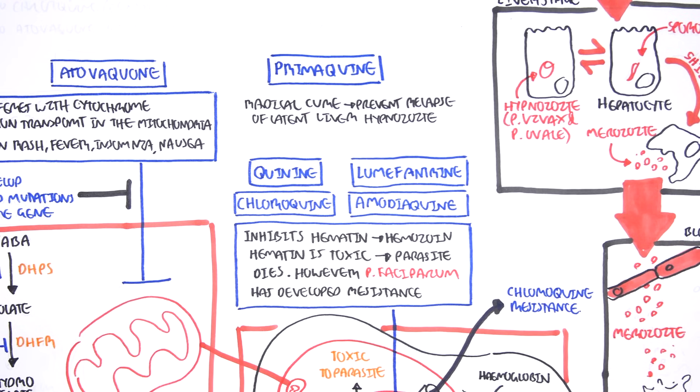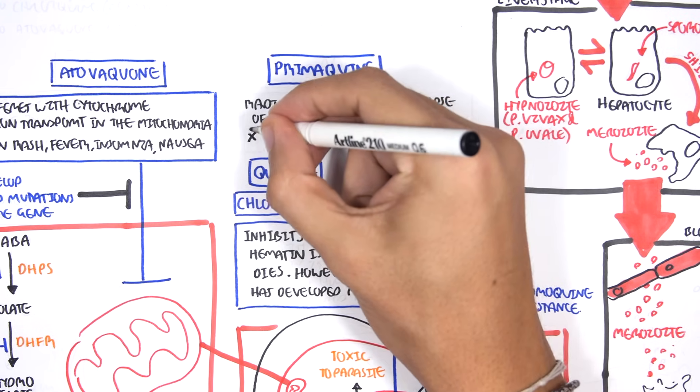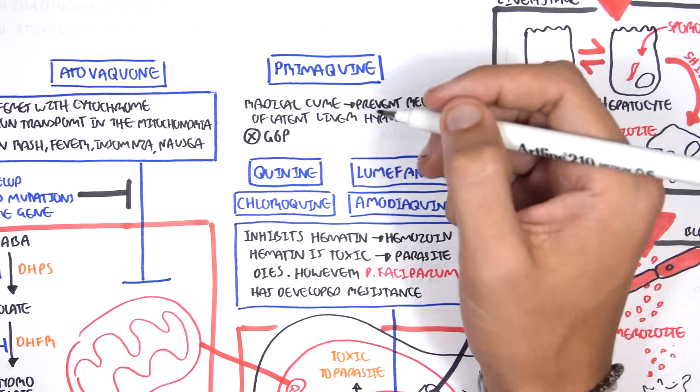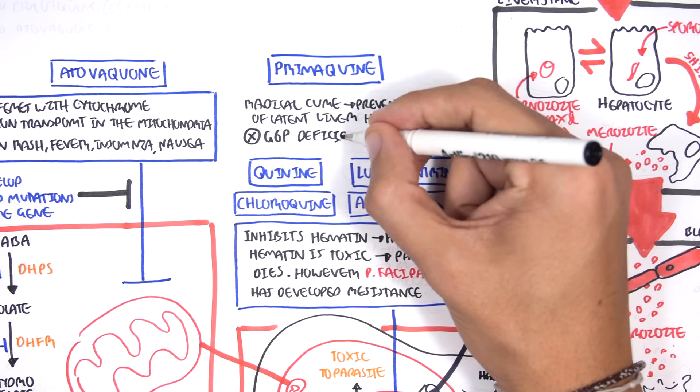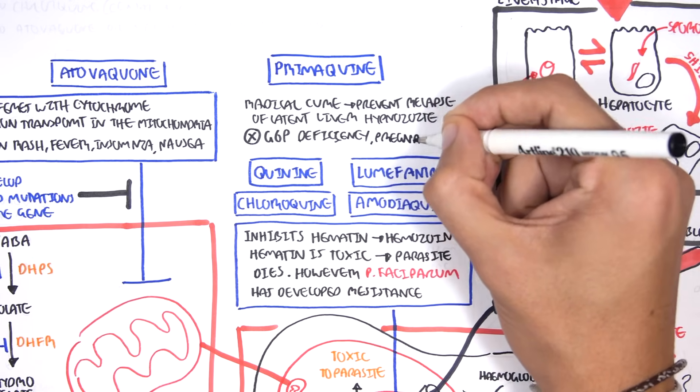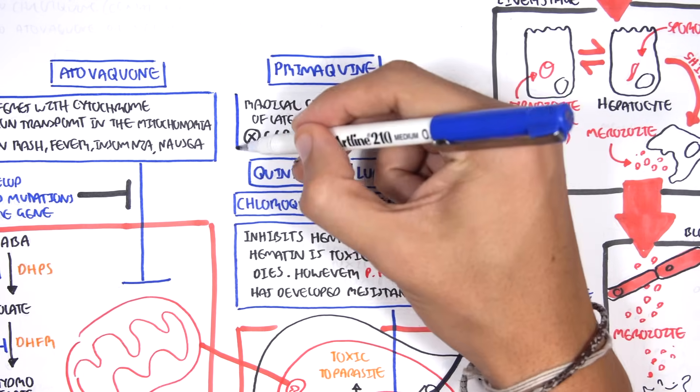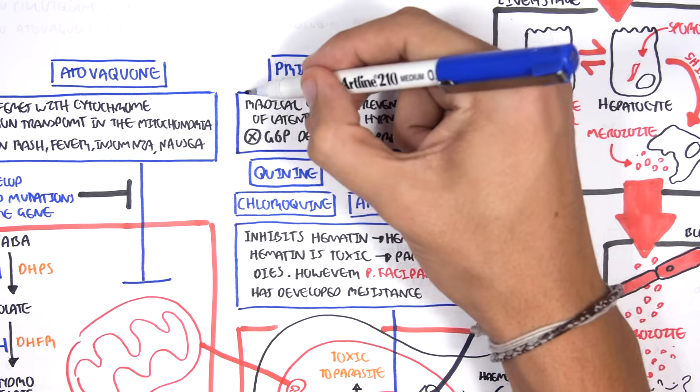Primaquine is contraindicated in people who have glucose 6-phosphatase deficiency, because it can cause hemolytic problems. And it is also contraindicated in pregnancy, like many other drugs are.